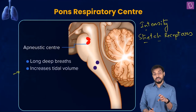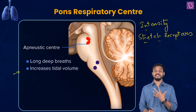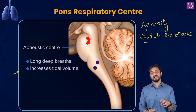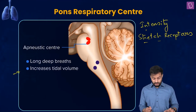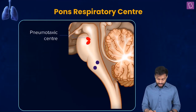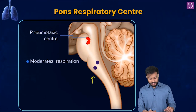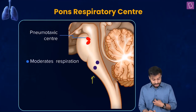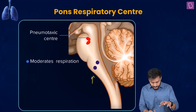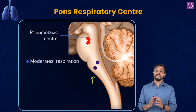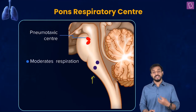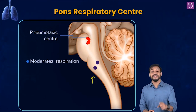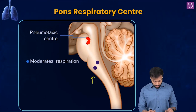The apneustic center regulates the intensity of the breathing — that is its function. This functioning is regulated or inhibited by the stretch receptors present in the pulmonary muscles. The pneumotaxic center moderates the respiration — it can control the function of the respiratory rhythm center to moderate the respiration process.